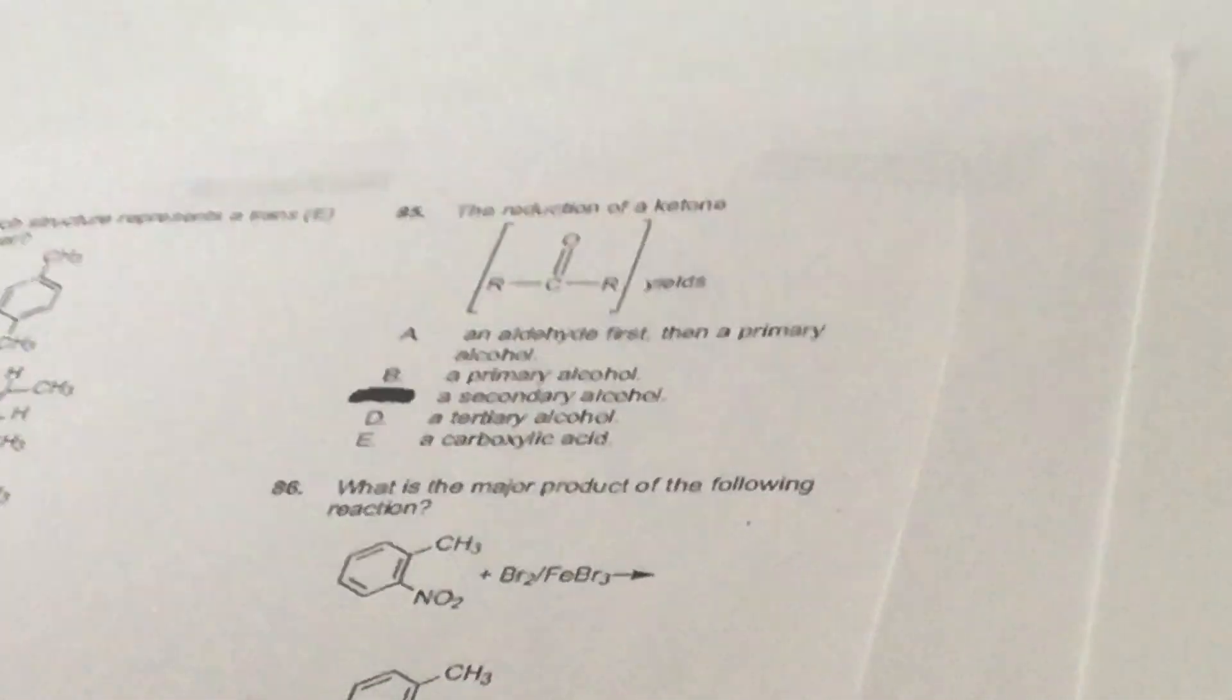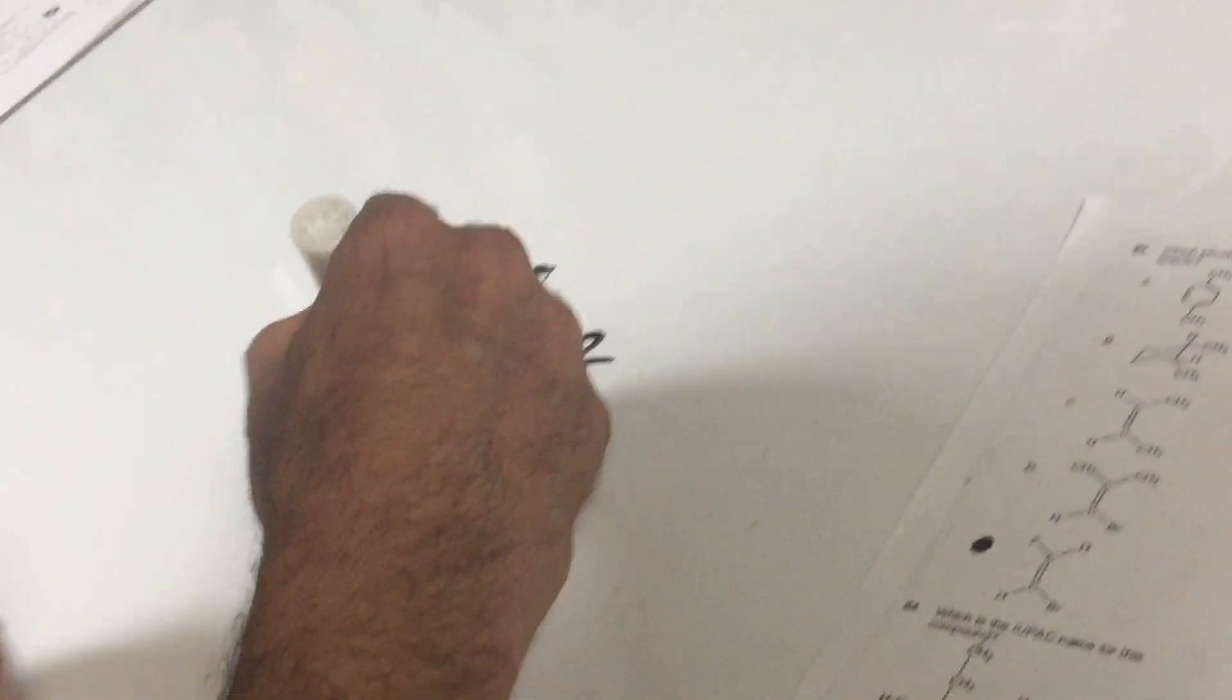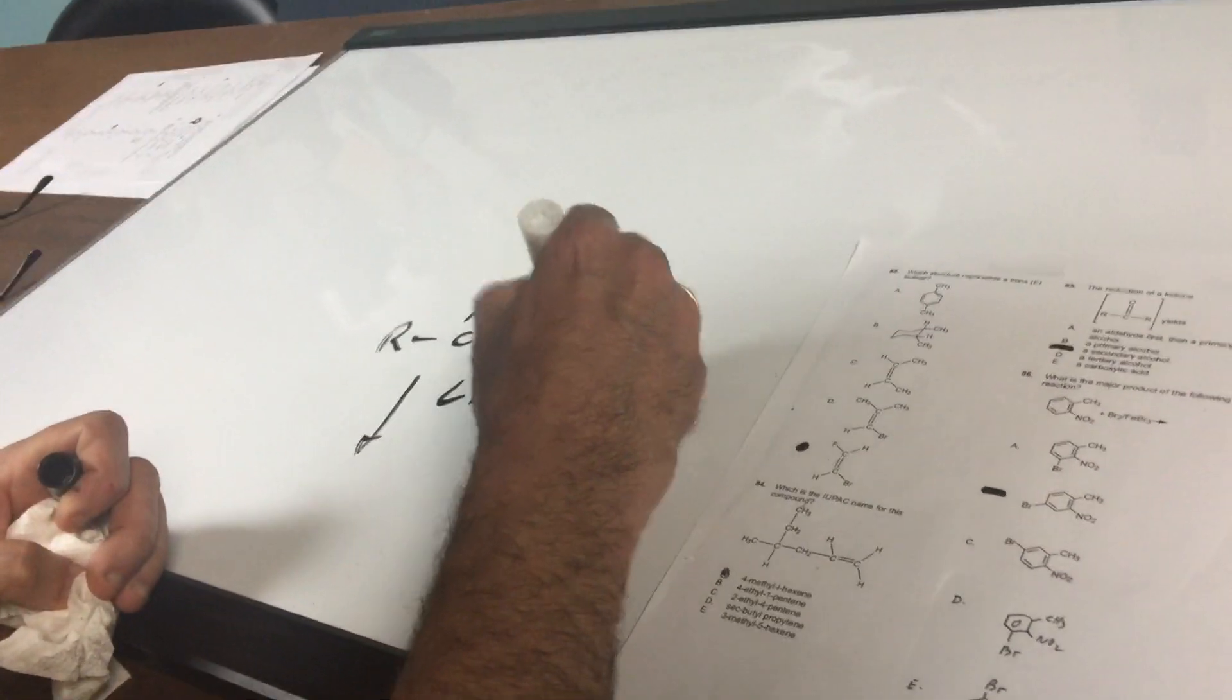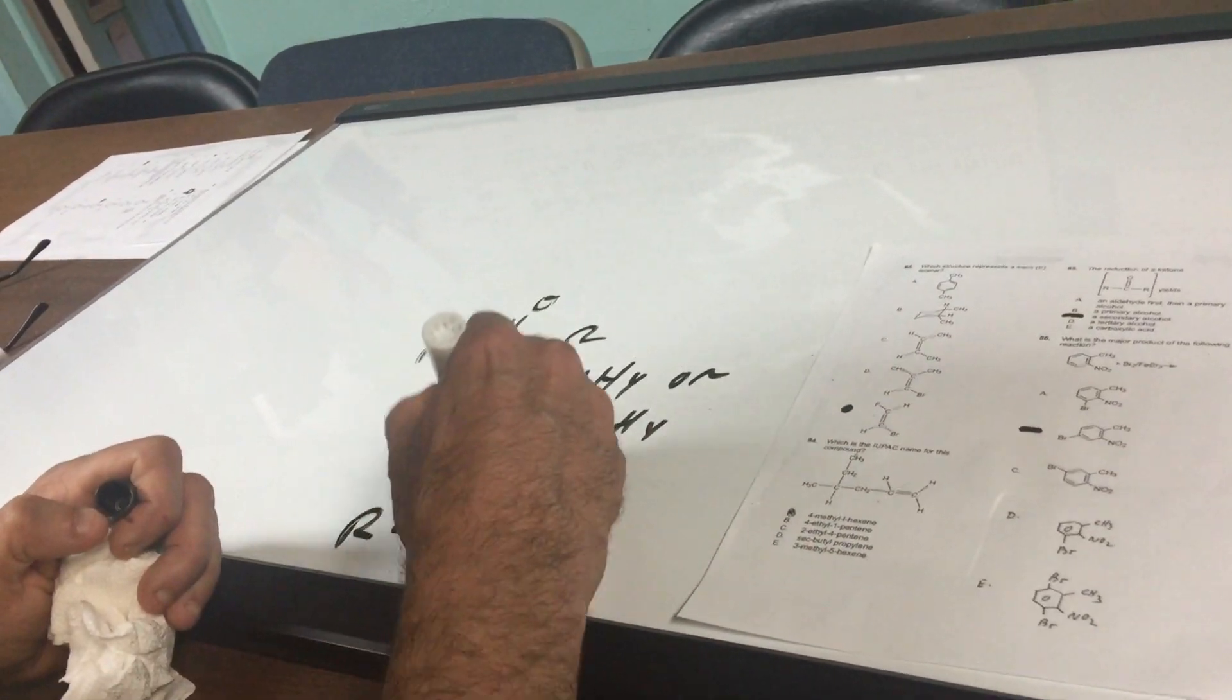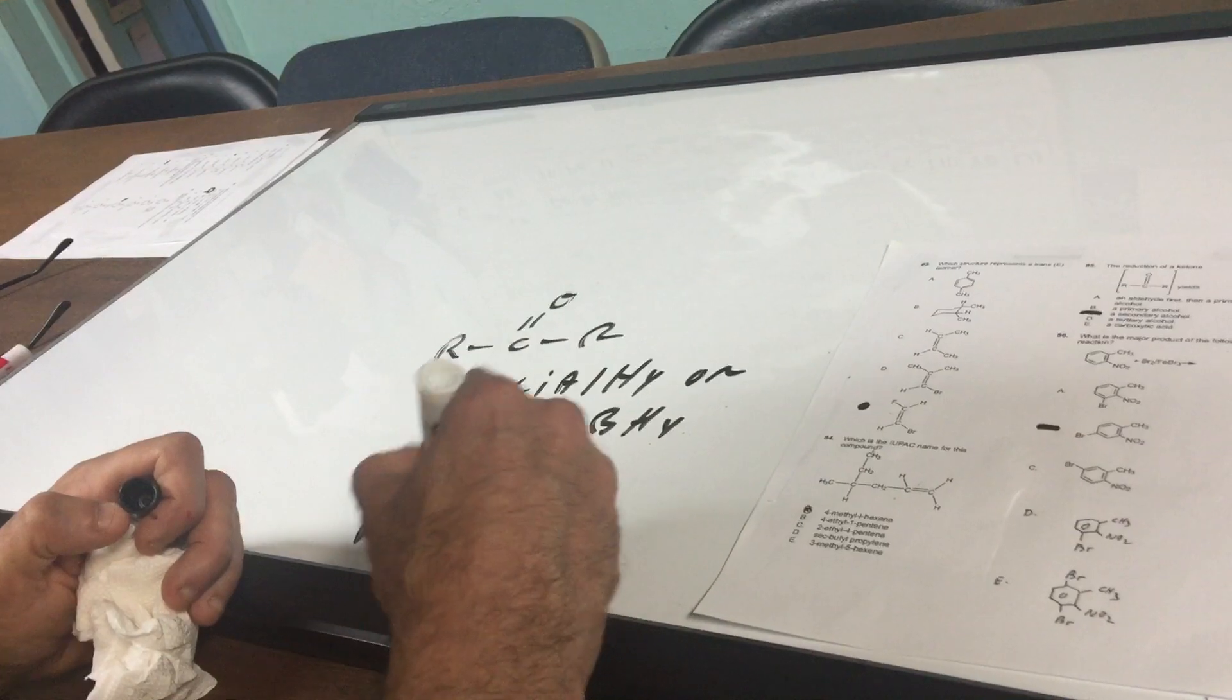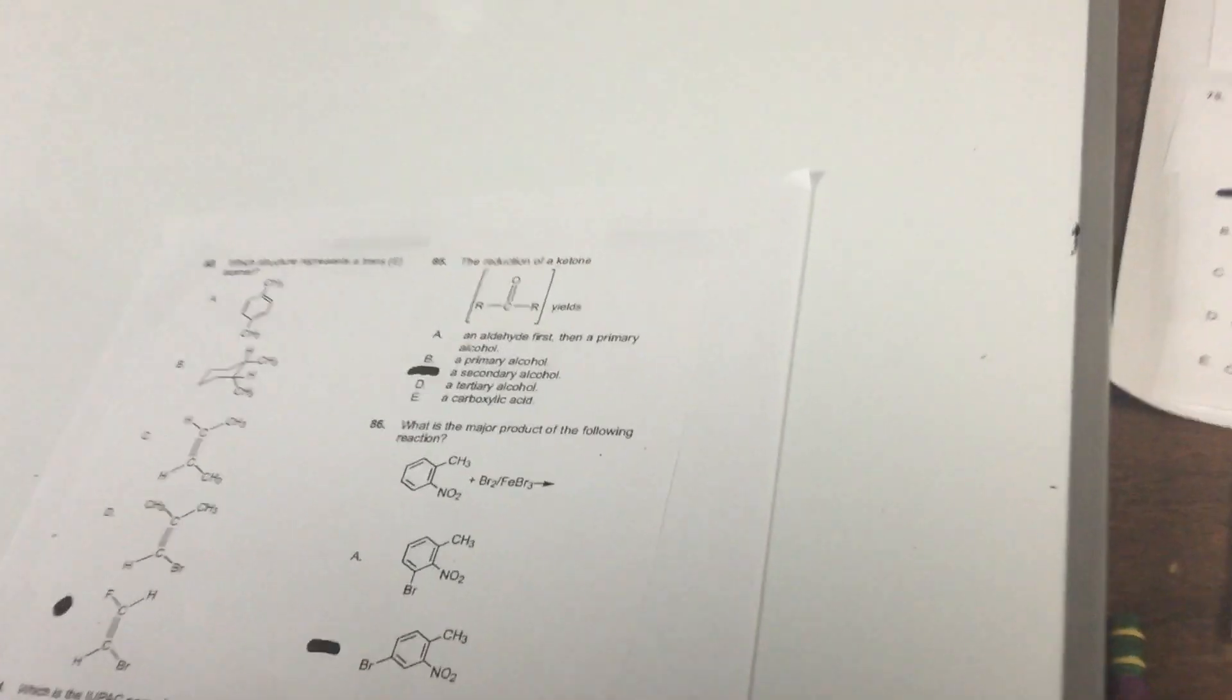If you look at number 85, the reduction of a ketone. So all you would do is if you go off to the side and I gave you a ketone and you reduced it, either with, say, lithium aluminum hydride or NaBH4, you break the double bond, put an H on it, put Hs all over the place, and that would give you the secondary alcohol.